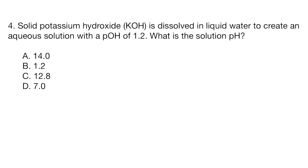Question four. Solid potassium hydroxide is dissolved in liquid water to create an aqueous solution with a pOH of 1.2. What is the solution pH? A 14.0, B 1.2, C 12.8, or D 7.0?